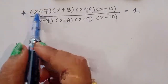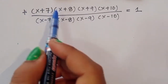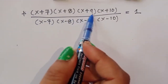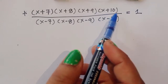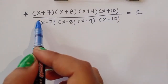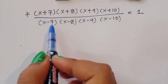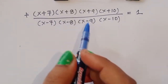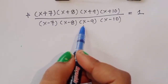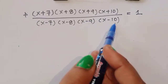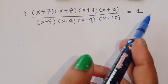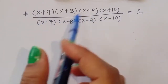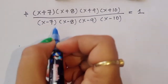Question 7: (x+7)(x+8)(x+9)(x+10) divided by (x-7)(x-8)(x-9)(x-10) is equal to 1. We have to find out the value of x here.